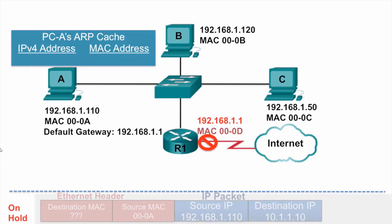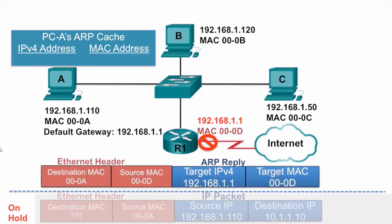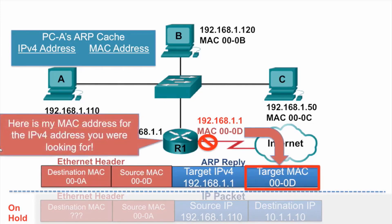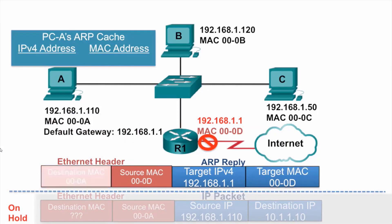Router R1 will issue an ARP reply in response. It will include its own MAC address, 000d, along with its IPv4 address. The destination MAC address of the ARP reply is a unicast directed for PCA, with a destination MAC address of 000d, so PCA receives the ARP reply.